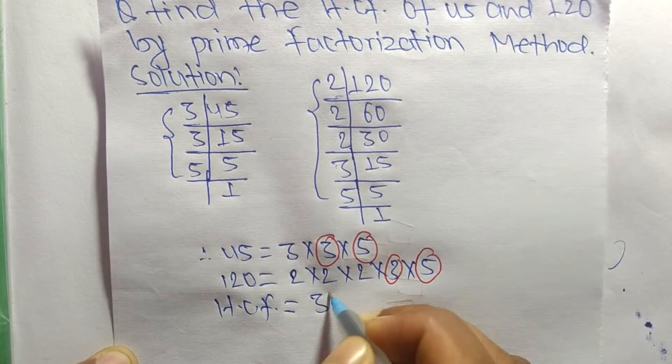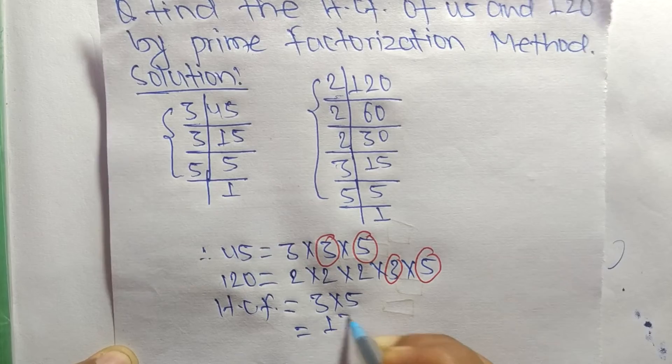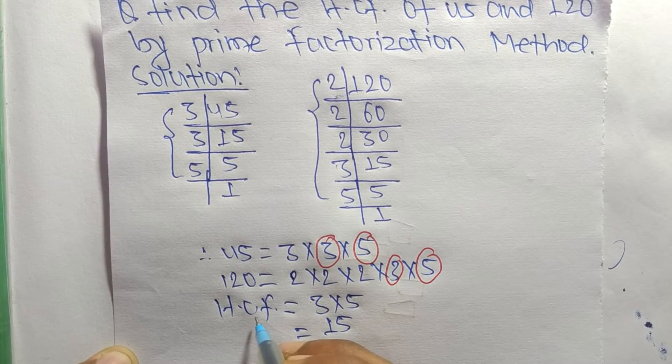So 3 times 5 equals 15. So 15 is the HCF of 45 and 120.